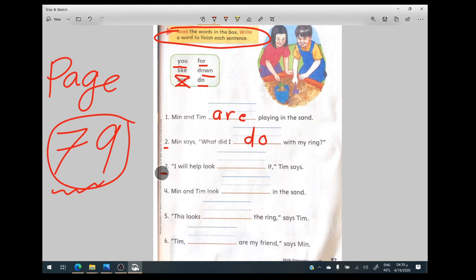Let's go to sentence number three. I will help look blank at Tim says. I will help look for it, Tim says. So here it will be the word for, and I will cross it out also.